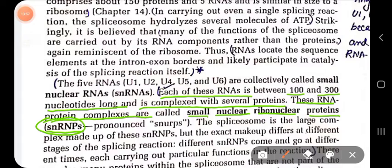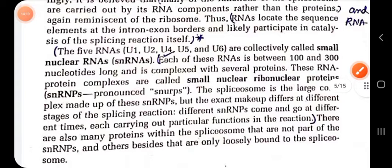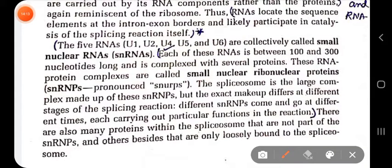The spliceosome is a large complex made up of snRNPs, but the exact makeup differs at different stages of the splicing reaction. Different snRNPs are observed at certain times of the reaction. You will see different subunits playing different roles at different stages — different snRNPs come and go at different times, each carrying out a particular function.